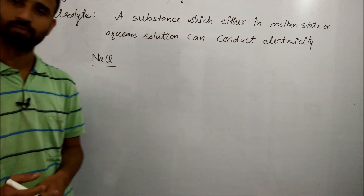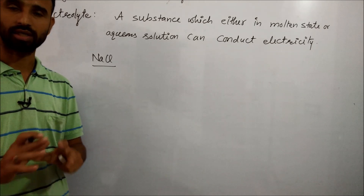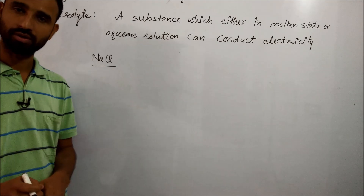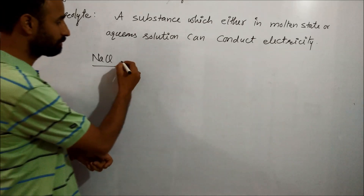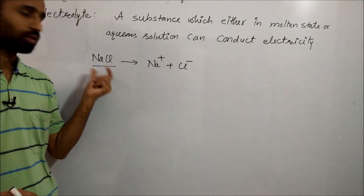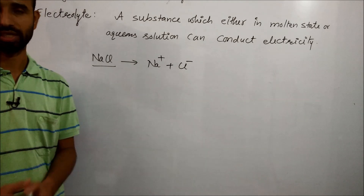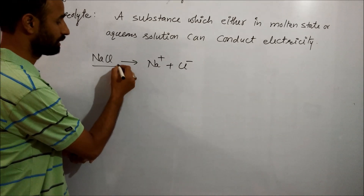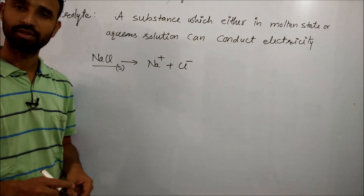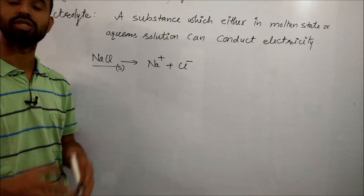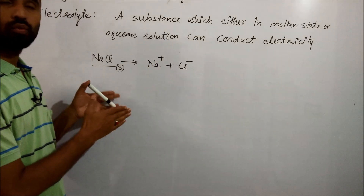NaCl already has ions, but in solid state it cannot conduct electricity because ions are fixed. In molten state, ions are free to move, giving Na⁺ and Cl⁻ ions. That's why NaCl is a good conductor in molten state and is considered a strong electrolyte because it dissociates completely.